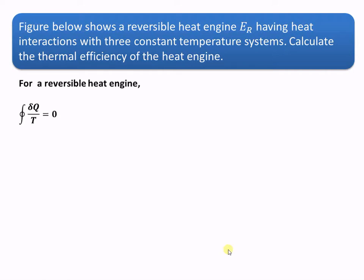For the reversible heat engine, the cyclic integral of dQ upon T is equal to zero. So we can say that Q1/T1 plus Q2/T2 minus Q3/T3 is equal to zero. Q1 and Q2 are the heat supplied so they are considered positive, whereas Q3 is the heat rejected and therefore it is considered negative.